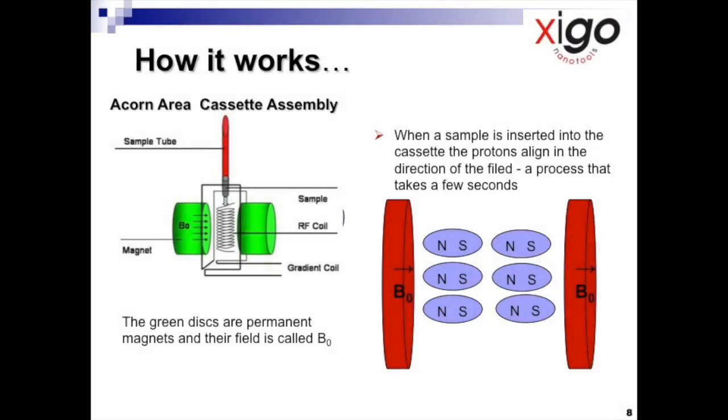When we place a sample contained in an NMR tube into the cassette assembly of the acorn area, it is concentric within an RF coil that is located between two permanent magnets, shown by the green disks in the schematic at left and the red disks in the schematic on the right, that provide a static magnetic field B sub zero.